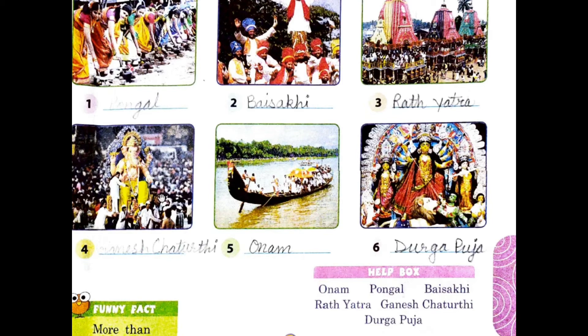Ganesh Chaturthi is a Hindu festival celebrating the arrival of Ganesh to Earth from Kailash Parvat. The fifth one is Onam. It is an annual festival celebrated in Kerala. It is a harvest festival celebrated by Malayalis.